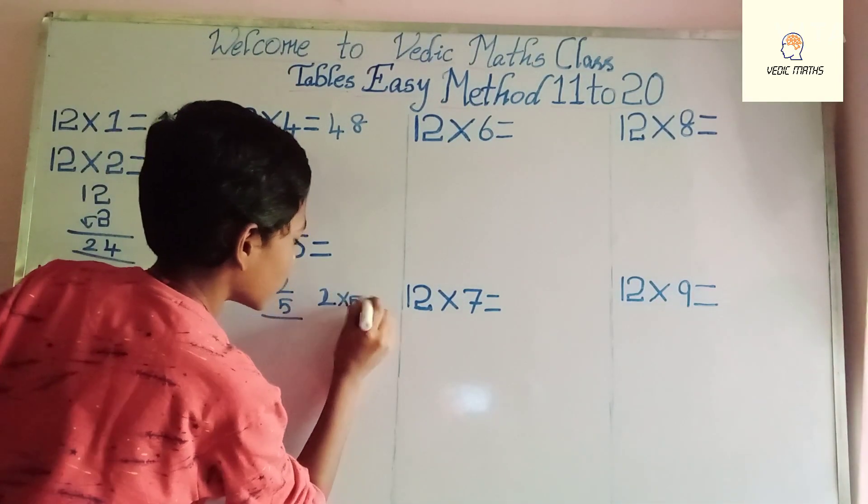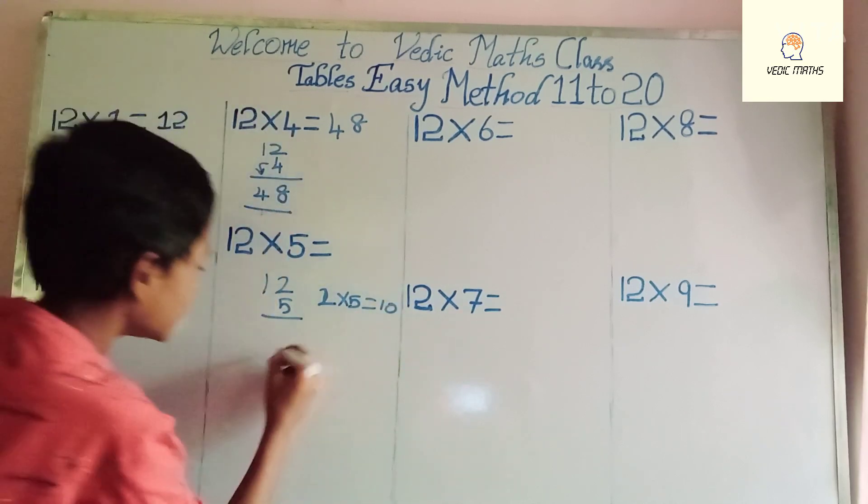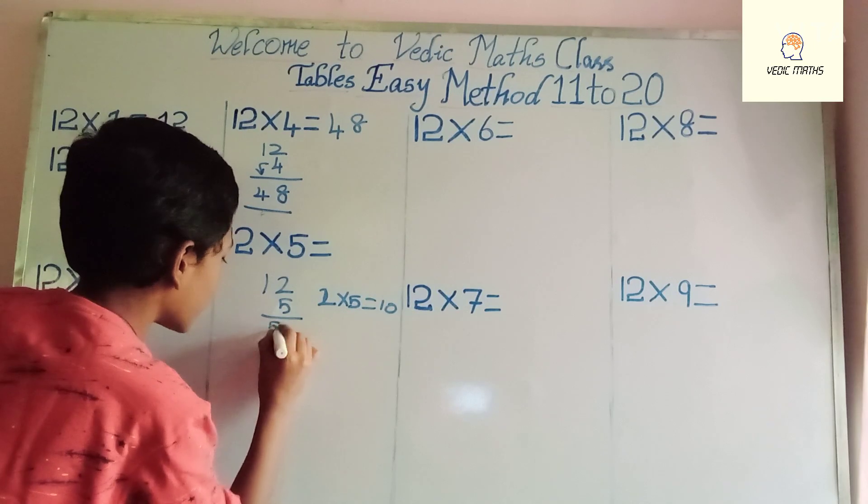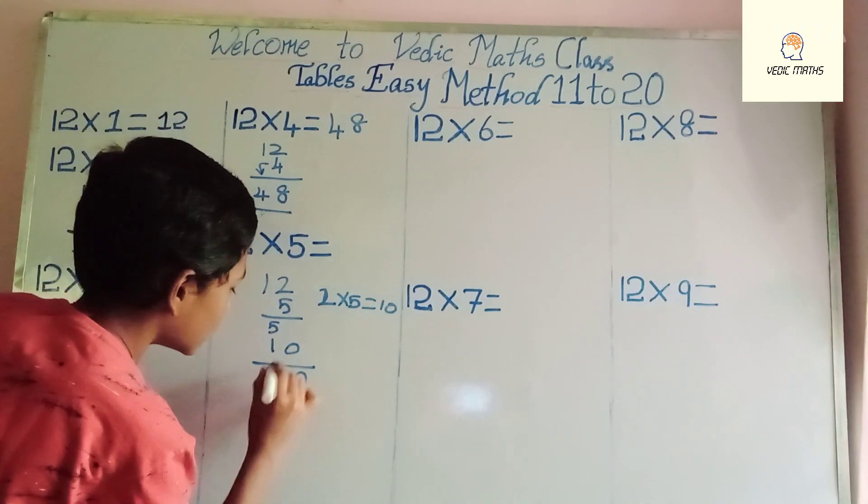Write 0 here and 1 here, and write multiplier 5 here and add this, that's 60.